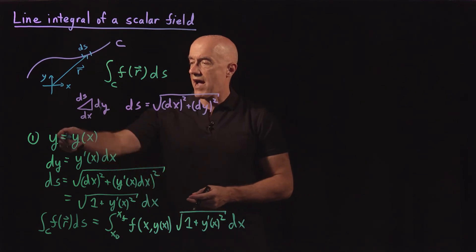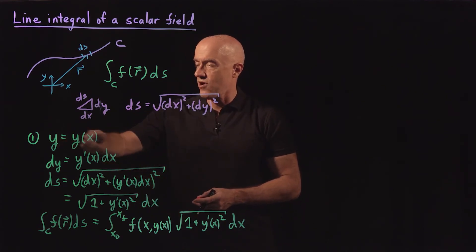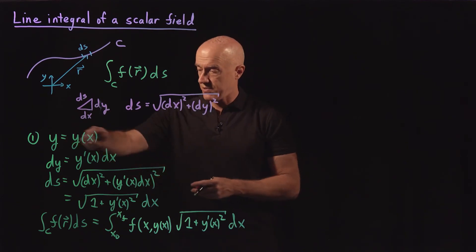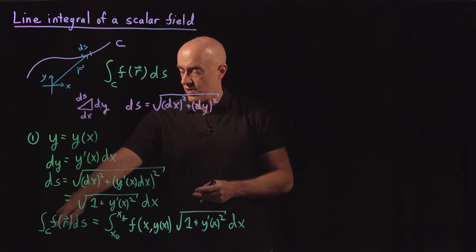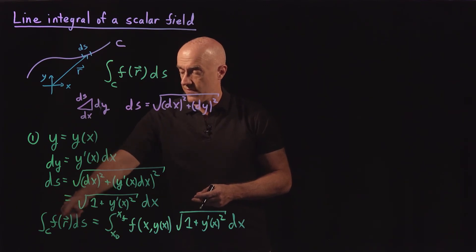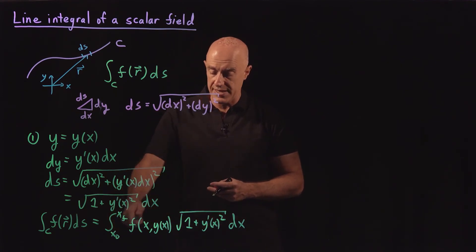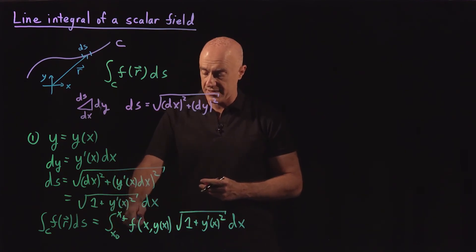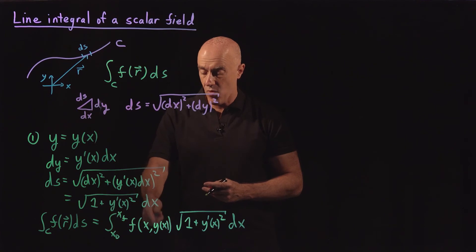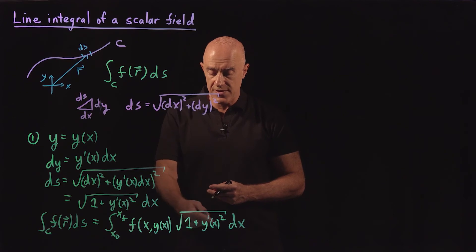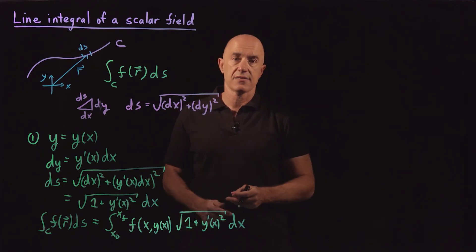So provided we know the functional form for the curve y equals y of x in the xy plane, then the line integral of f along that curve — the integral along curve C of f of r ds — can be written as a one-dimensional integral in x: from the initial to the final value of x, of f of x, y of x, times the square root of 1 plus y-prime of x squared, dx.